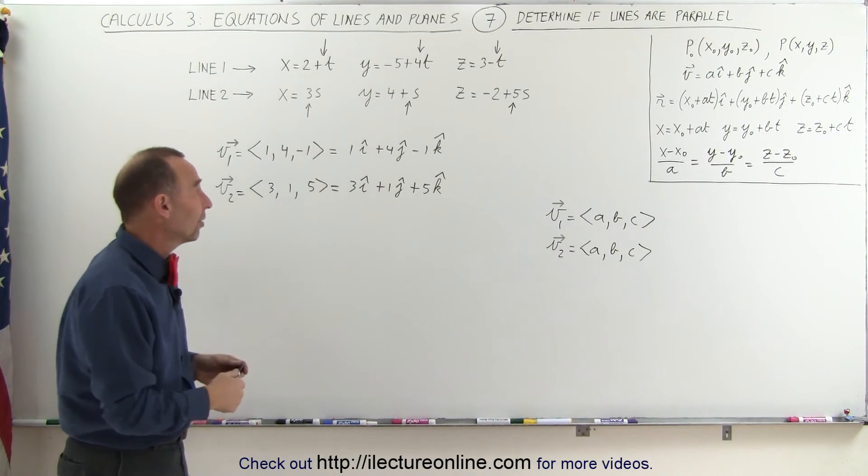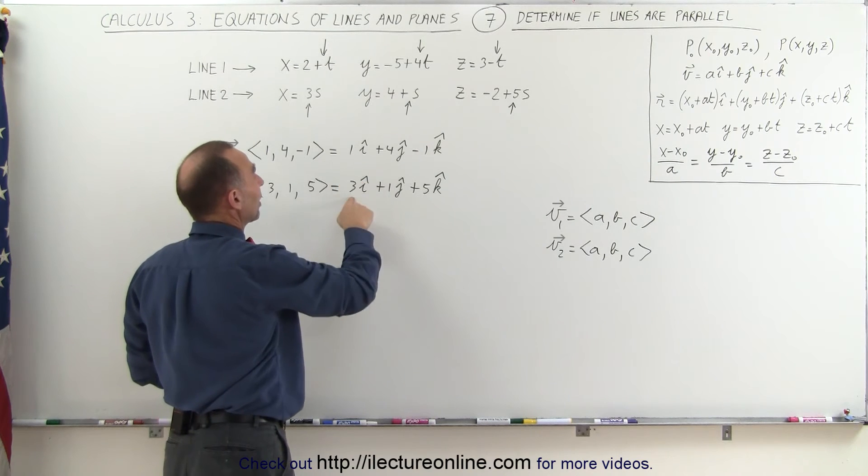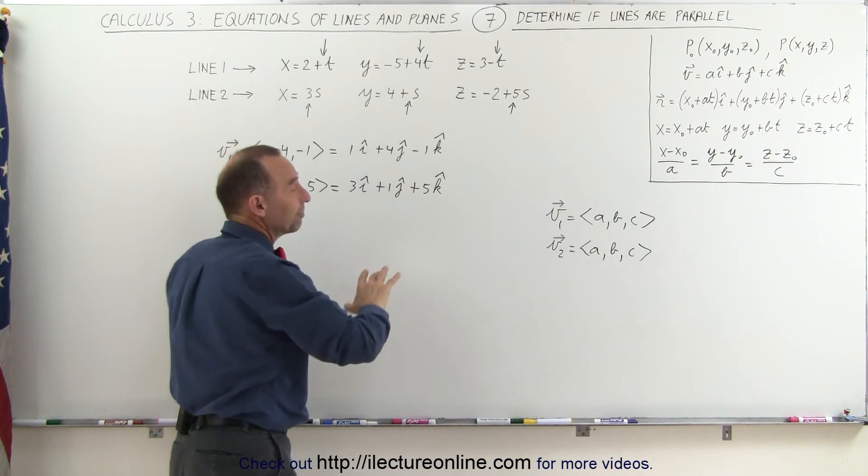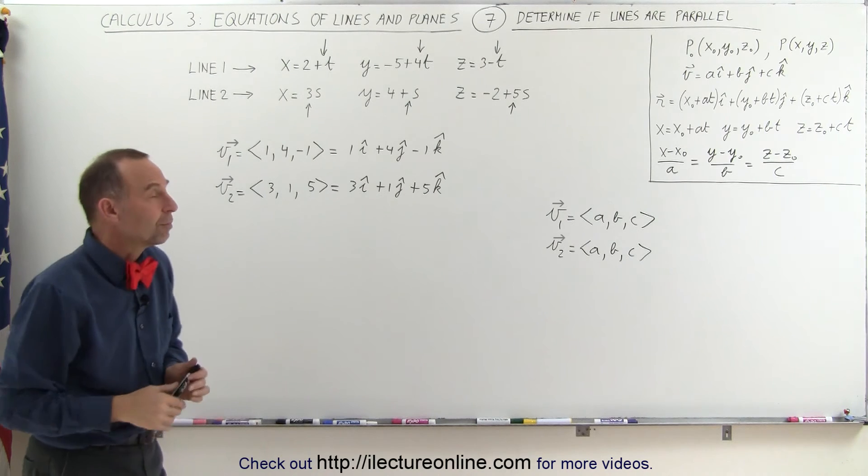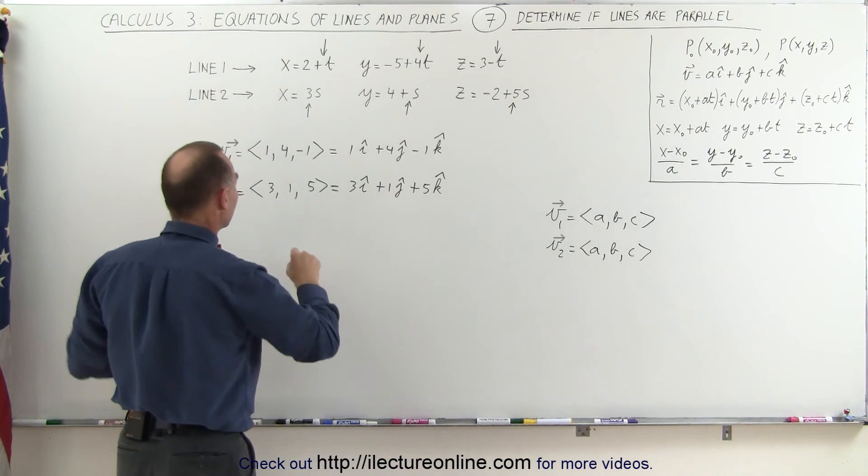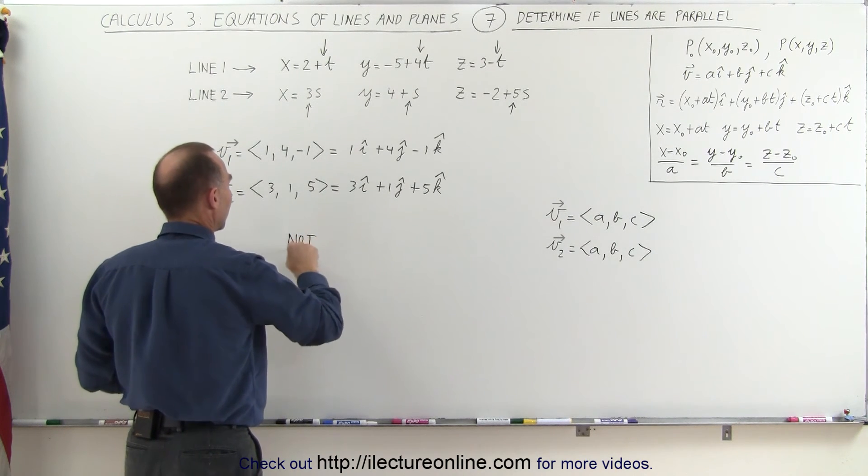But in this case, they are not. Notice that this is smaller than this, this is bigger than that, this is negative, that's positive. There's no way that those two vectors can be parallel, therefore we can conclude not parallel.